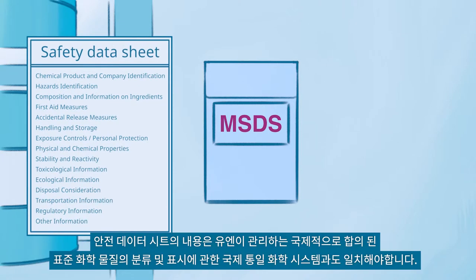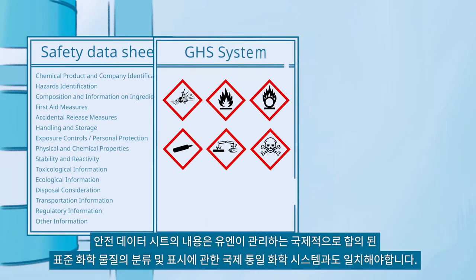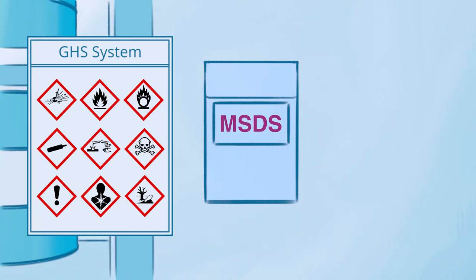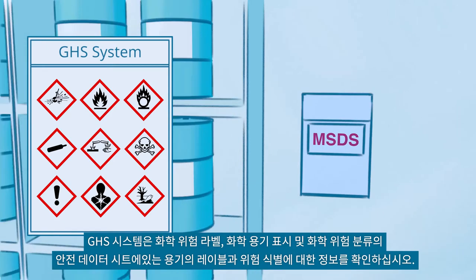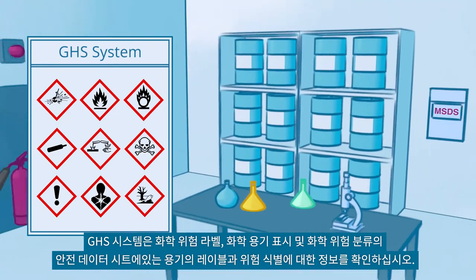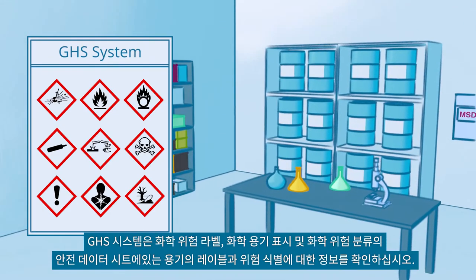The content and structure of Safety Data Sheets should be in line with the Globally Harmonized System of Classification and Labeling of Chemicals, which is an internationally agreed-upon standard managed by the United Nations. The GHS system also harmonizes the use of chemical hazard labels, markings for chemical containers, and the chemical hazard classification.